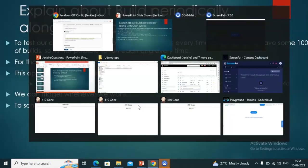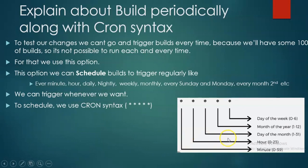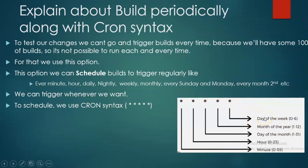What do these stars mean? The first star represents minutes — if we give star it means every minute. The second star represents hours — every hour. The third represents day of the month — every day. The fourth represents month of the year — every month. The fifth represents days of the week — zero means Sunday, six means Saturday. So here we are saying we need a build every minute, every hour, every day.